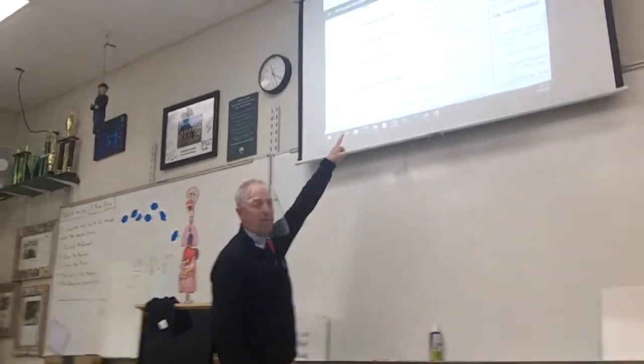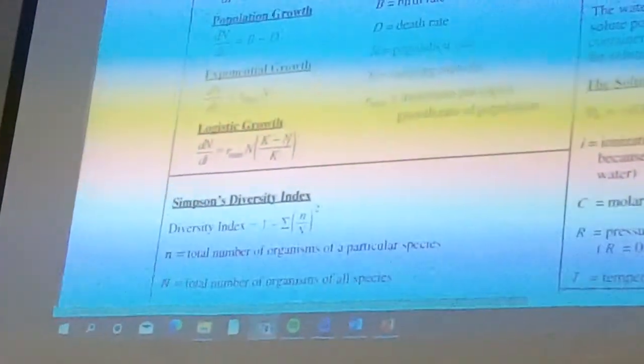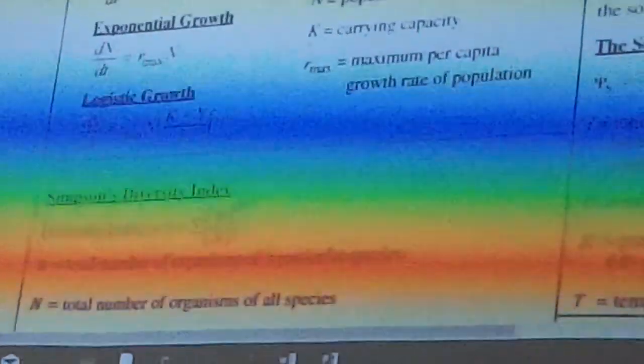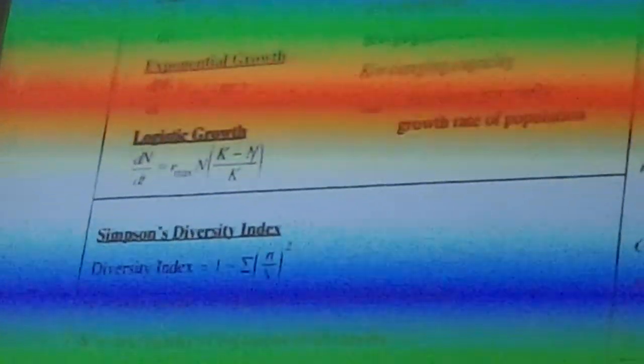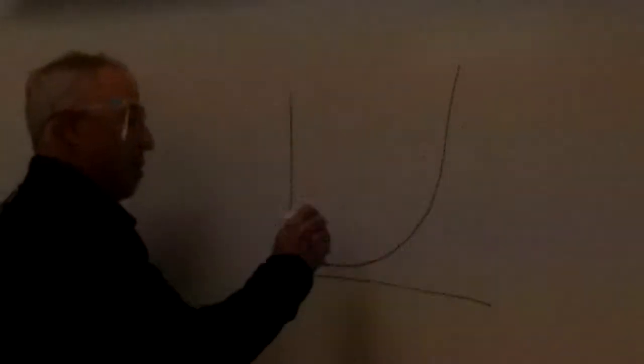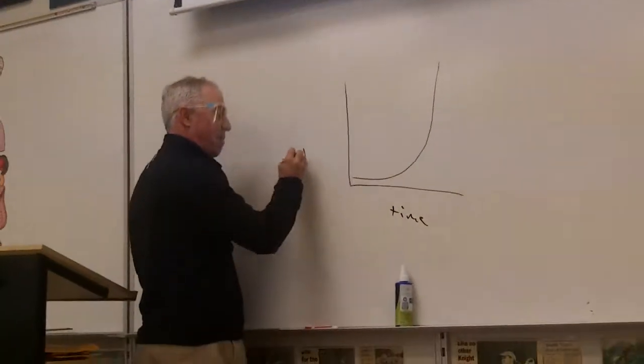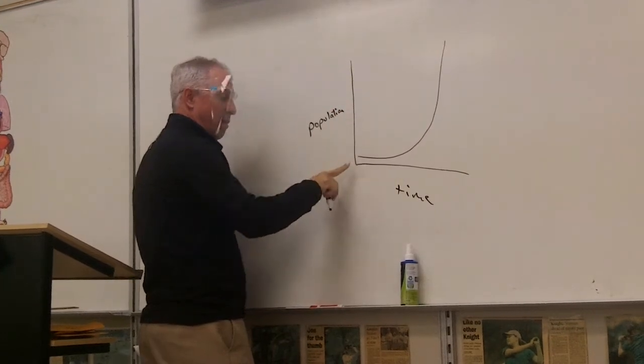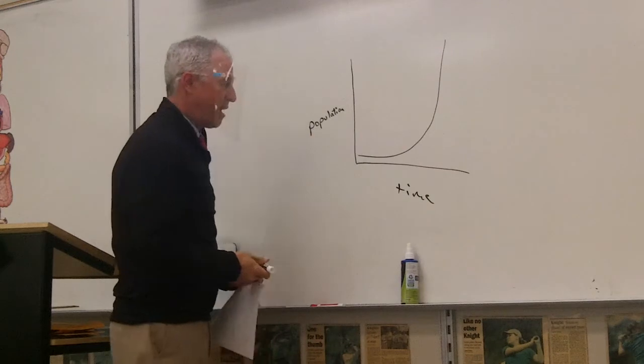There's the logistic growth formula. And if you forget what logistic growth is, normal exponential growth looks like this. The population, this is time, this is our population.